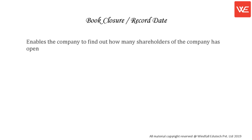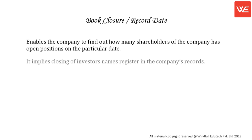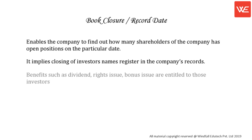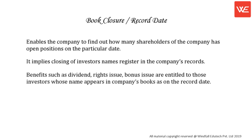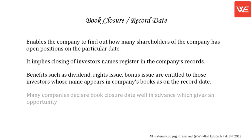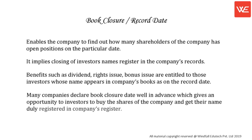Book Closure and Record Date. Enables the company to find out how many shareholders have open positions on a particular date. It implies the closing of investors' names register in the company's records. Benefits such as dividend, rights issue, and bonus issue are entitled to those investors whose name appears in the company's books as on the record date. Many companies declare the book closure date well in advance, giving investors an opportunity to buy shares and get their names duly registered in the company's register.